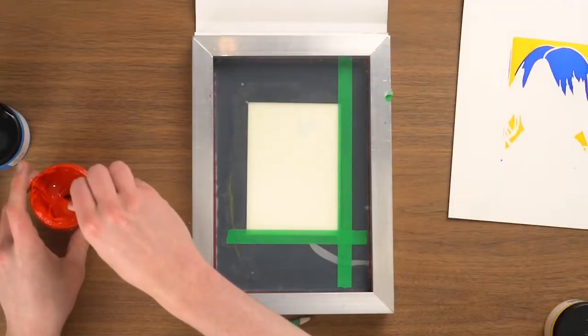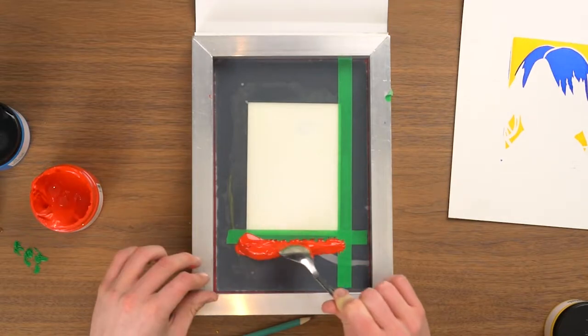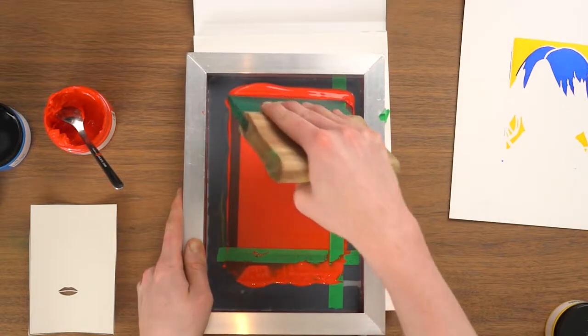Next, I'm using some red for the mouth and again we're repeating our steps. One, application of the paint. Two, flooding the paint without the screen touching a surface.